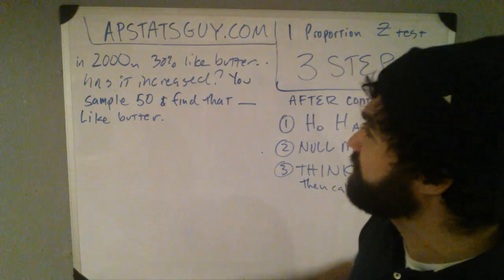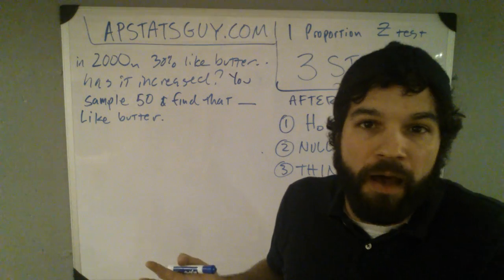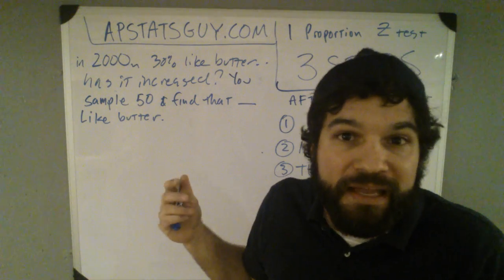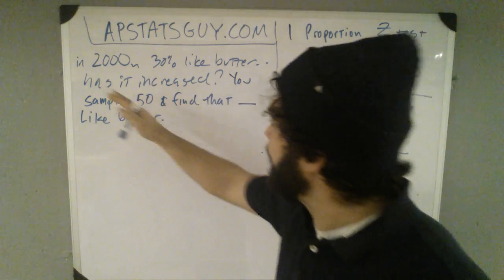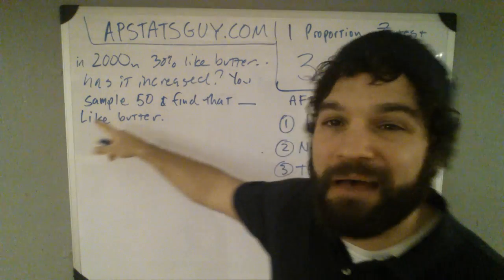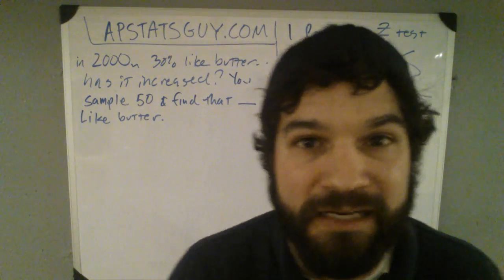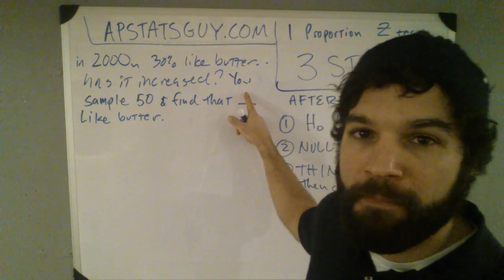So here's the problem I have. In 2000, 30% of people liked butter. We know there's this whole thing now that more people, butter's not as bad as it once thought, right? Has it increased? Meaning, how do more people like butter now? Now, I go out and sample 50 people randomly. And I find that some amount like butter.